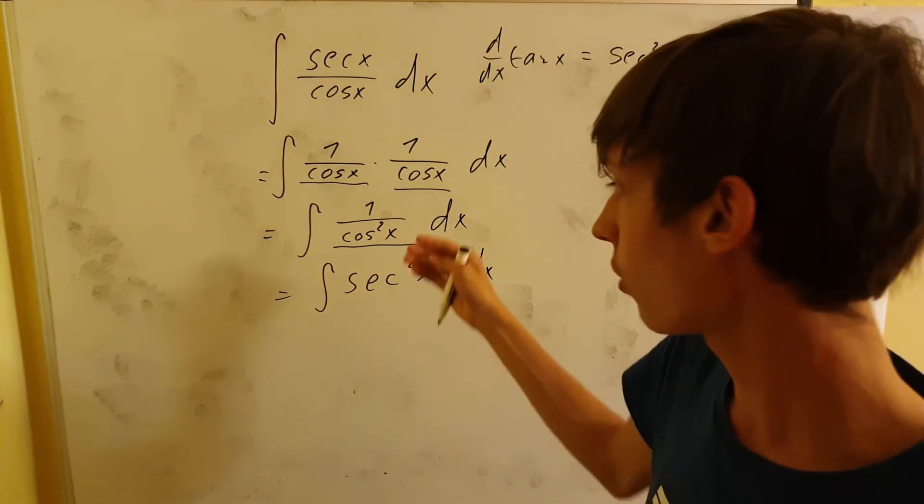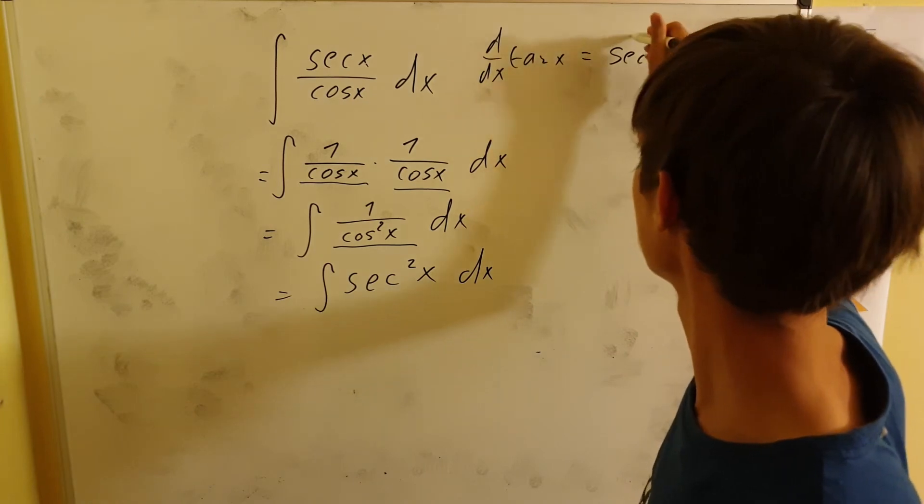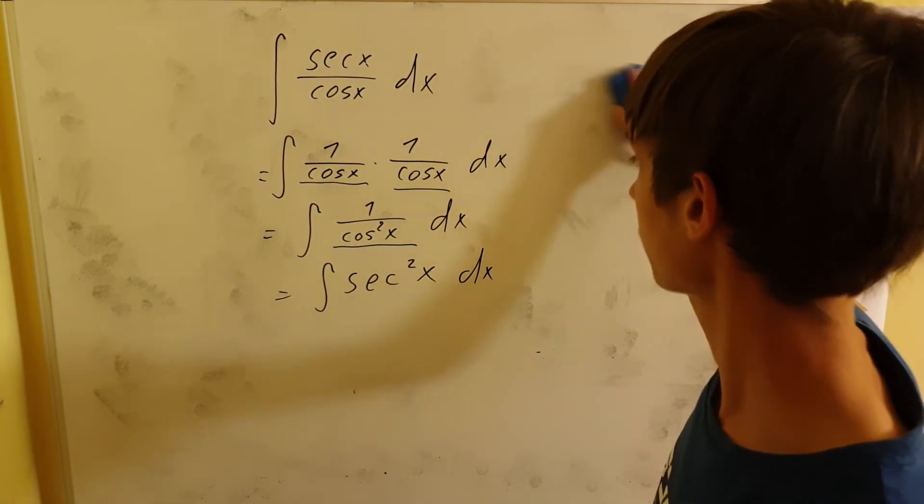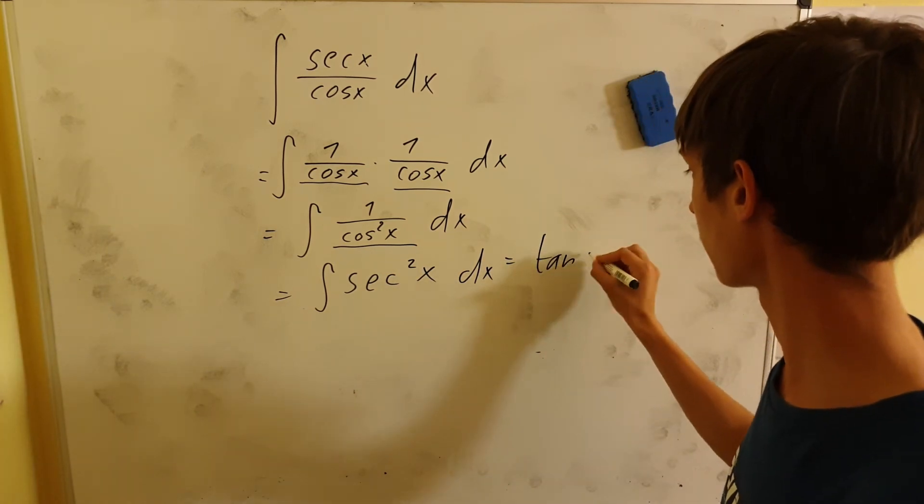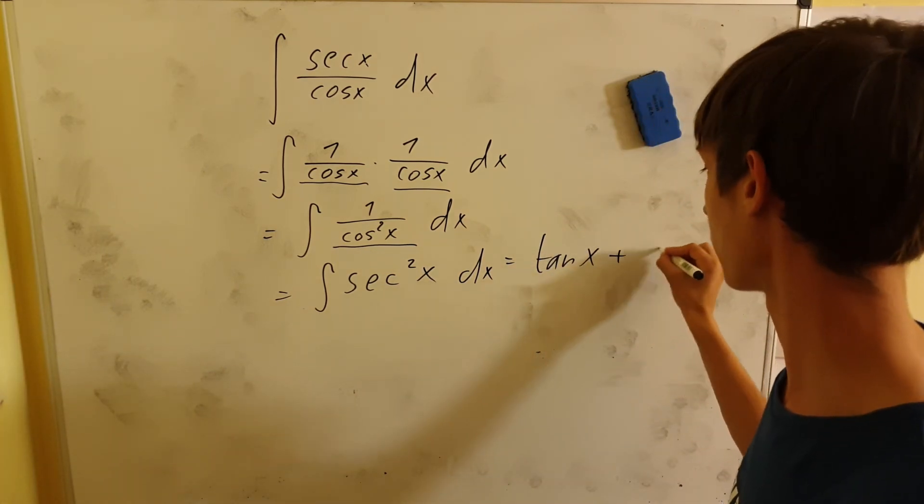So we know that our result will be tangent x plus a constant, because the derivative of tangent is secant squared, and the integral of secant squared is tangent.